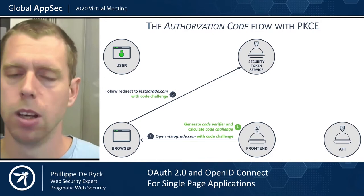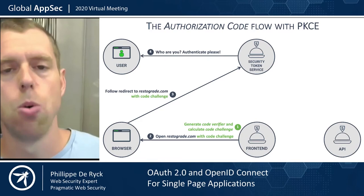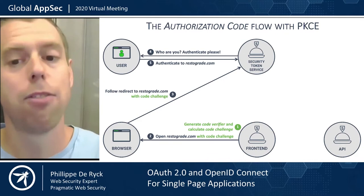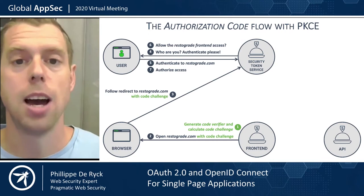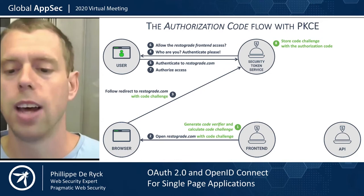The STS behaves very similarly to before. It asks the user to authenticate, and if authorization is required, it checks for that. If everything checks out, the STS keeps track of that code challenge along with the authorization code. The authorization code is a unique code valid for one-time use, and that's what the STS sends back to the browser. The browser loads the single page application again and gives the application the authorization code through the URL.